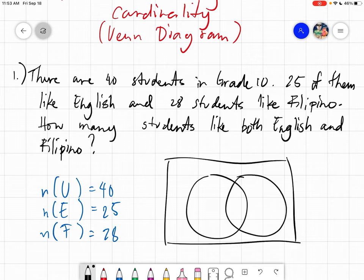So it's always intersecting. Bakit? Kasi may mga students na they like English and at the same time they like Filipino. So for this case, ang students natin would be 40. 40 students are part of the universal set. So it is always written on the rectangle. Now as for the set name, we will label it as E for English and F for Filipino.